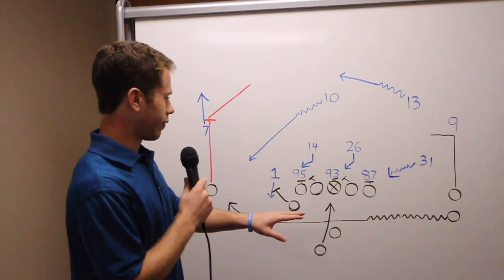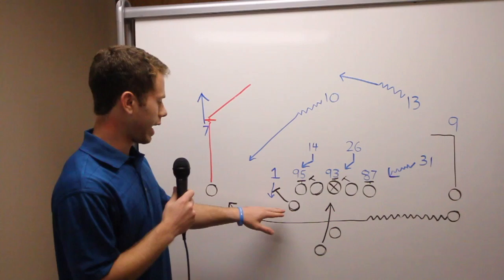As you can see, we've got two receivers lined up to the right side and one to the left. We've got one halfback in the backfield and an H-back lined up to the left side of the formation.